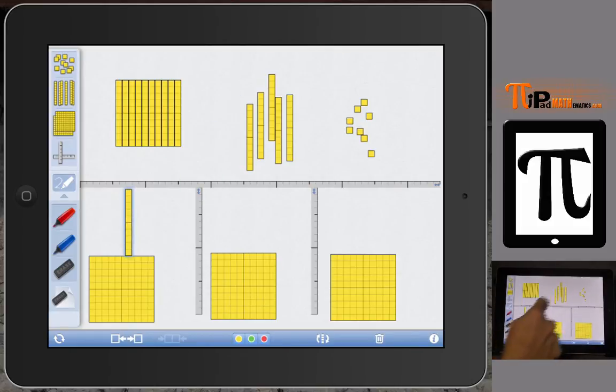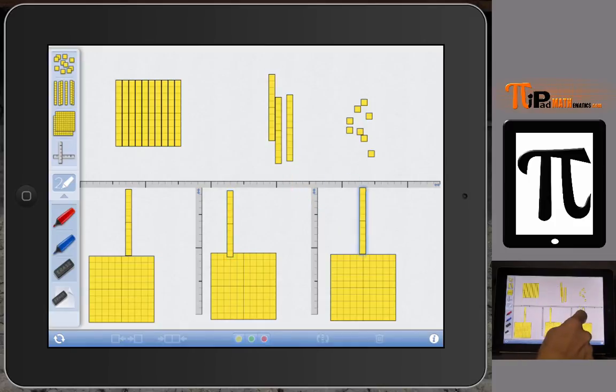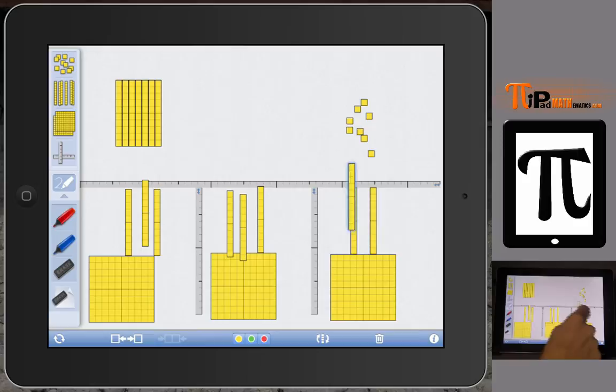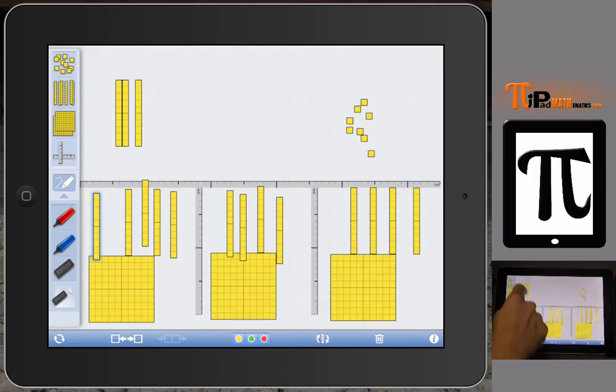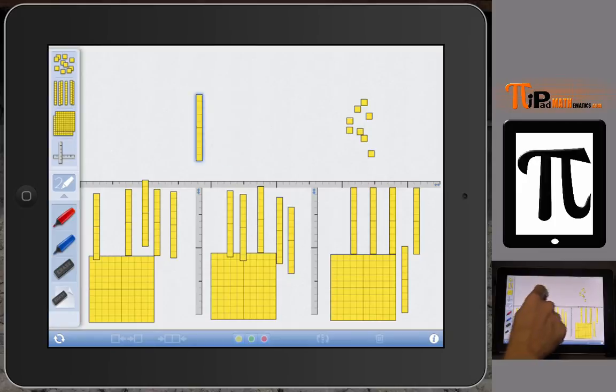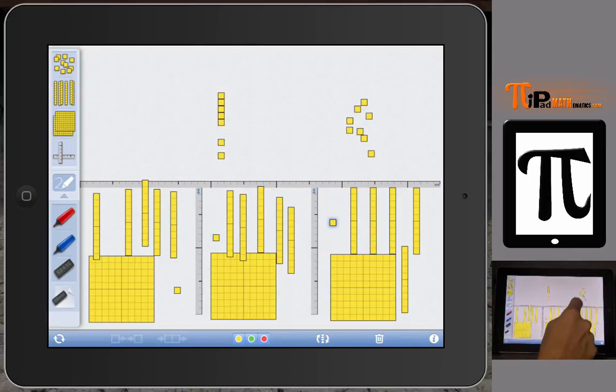And now I can take my longs and start placing them one in each group. And again, we're sitting here with one long left over, and I need to break it up because I only have one and it needs to go in all three places. So I need to break it up and then we take those units and we move them into each individual box.